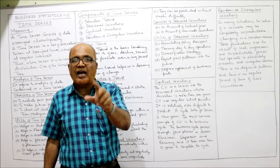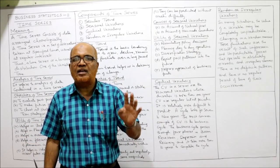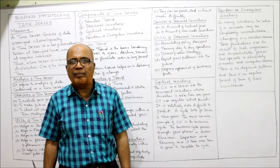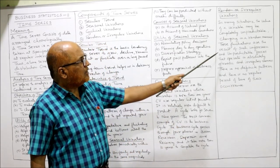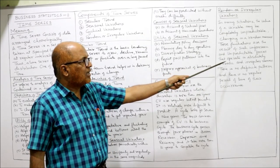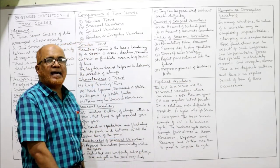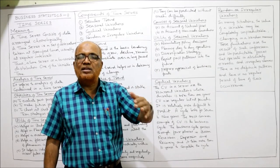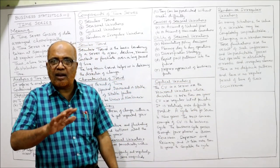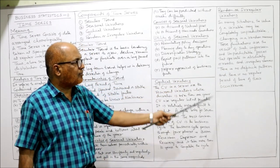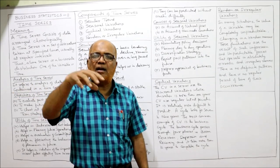Due to this pandemic, a lot of effect has been there on the economy — production, sales, everything has been affected. It's an example of unpredictable random change. These fluctuations are the result of unforeseen and unpredictable forces that operate in an absolutely erratic and irregular manner. Unlike seasonal and cyclical variations which are predictable changes, random or irregular variations are completely unpredictable — there is no definite pattern and no regular period of recurrence.